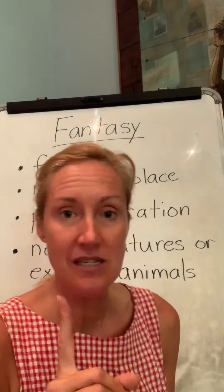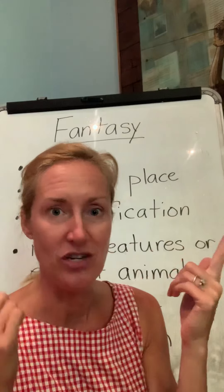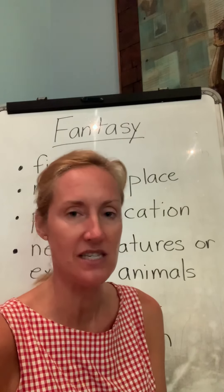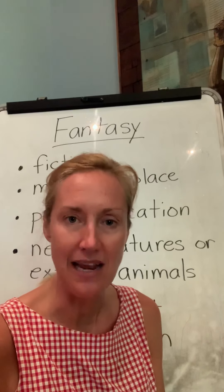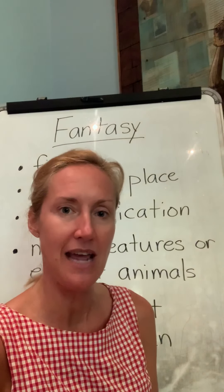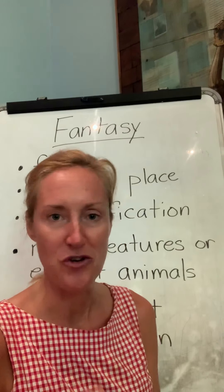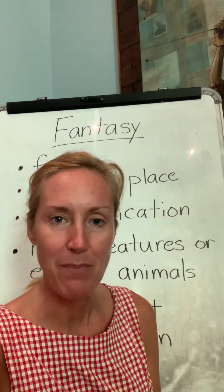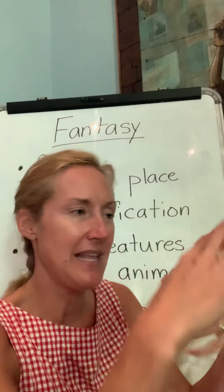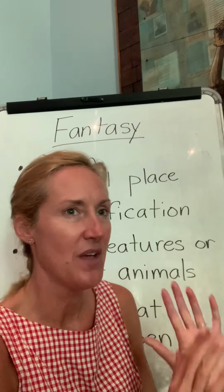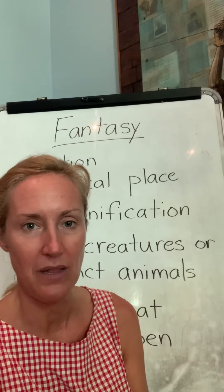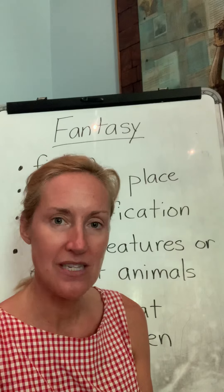Today, your first step is to try to imagine your setting. Where is this magical place where your story is going to take place? Your first step is going to be to start to draw a picture or a sketch. Get your crayons or colored pencils and a piece of paper, and start to draw. What does this place look like? What kind of plants, animals, colors, and things are you going to see in this magical place? Start to create your setting.